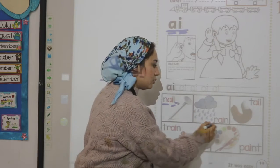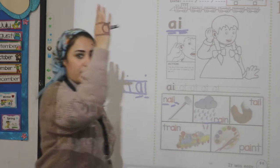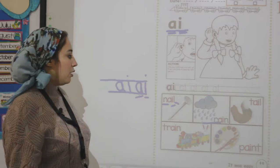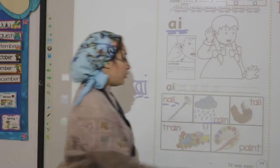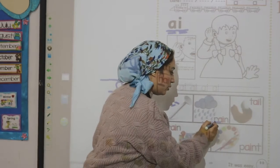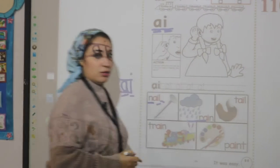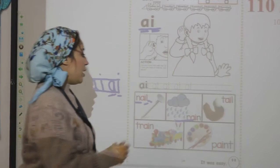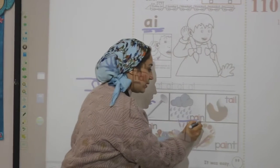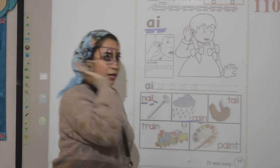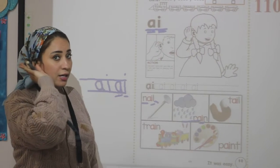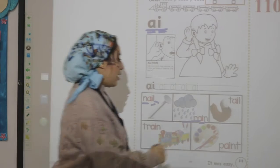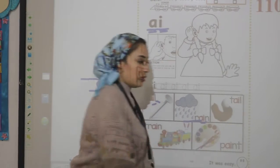Look, what is this? Rain. What is the first sound in the word rain? R. And what is the middle sound? A. And what is the last sound? N.